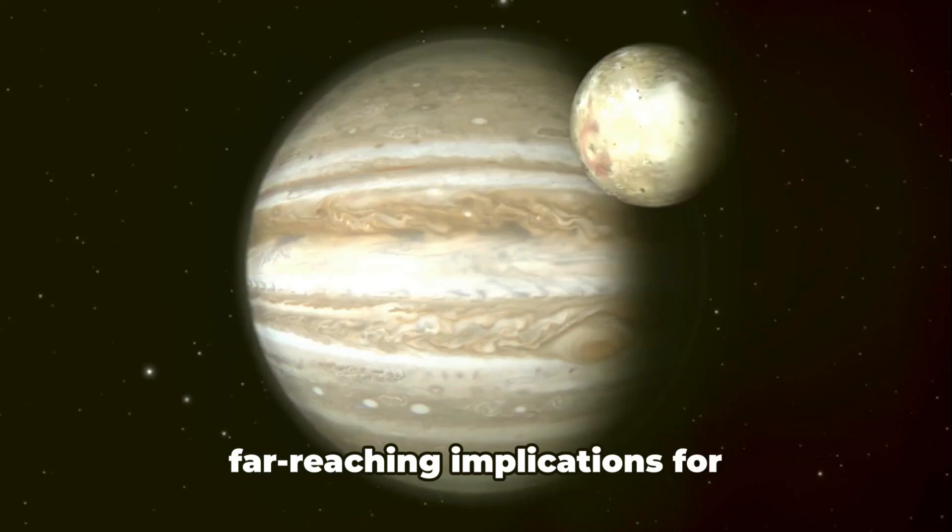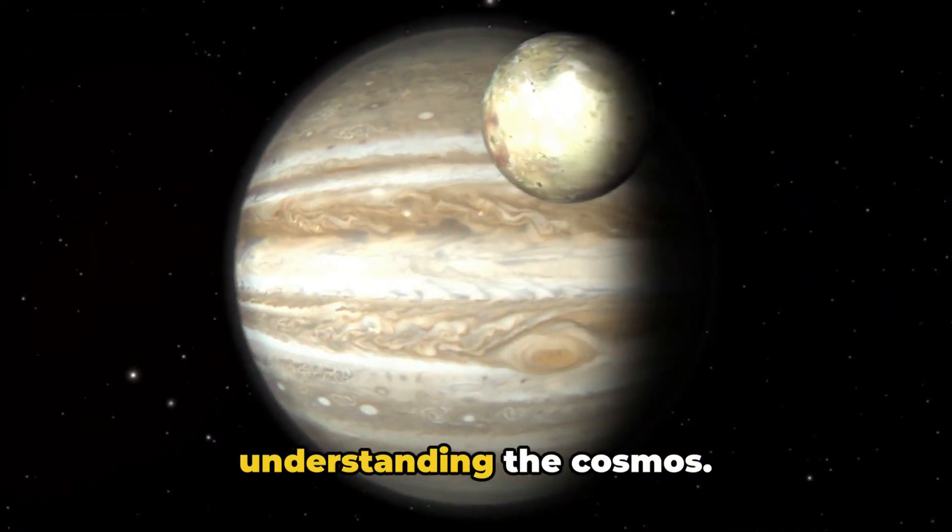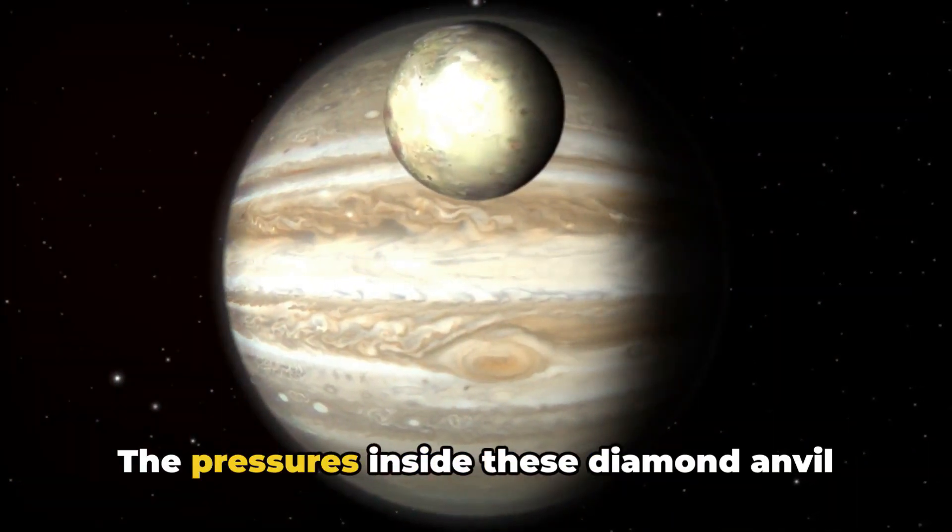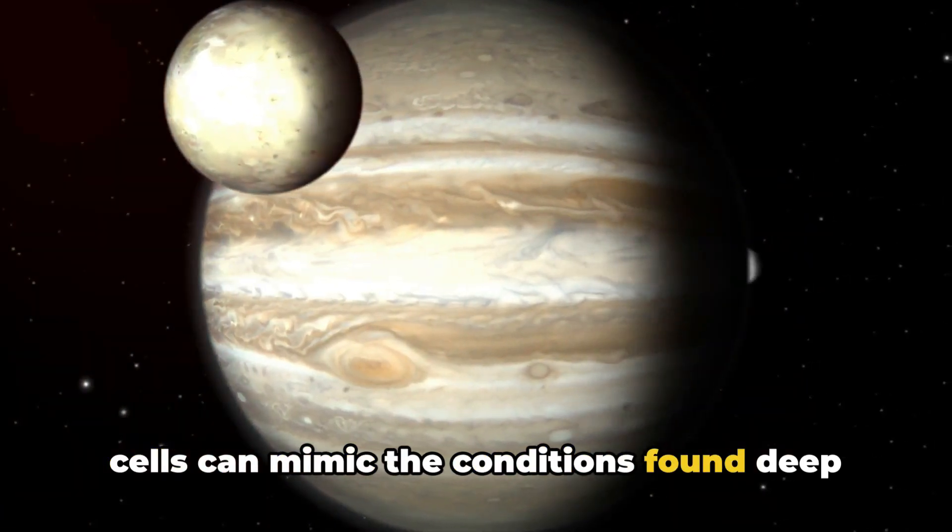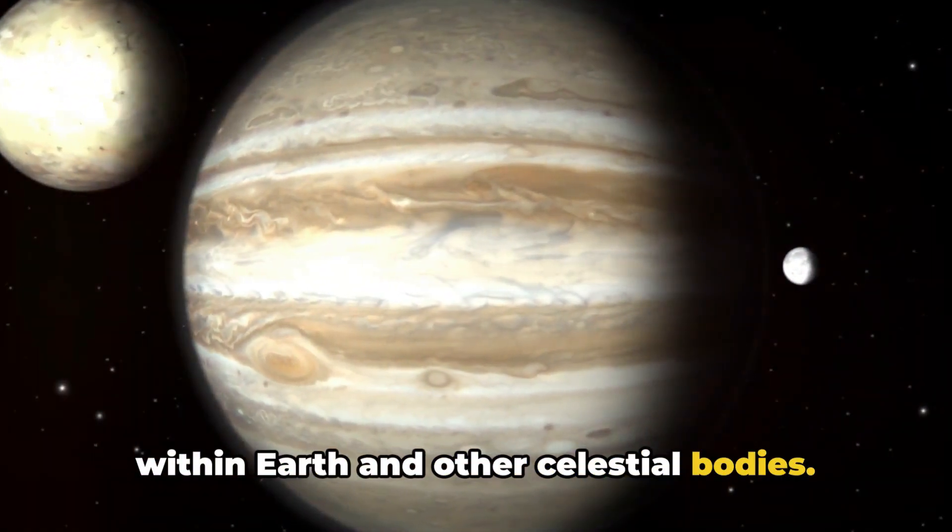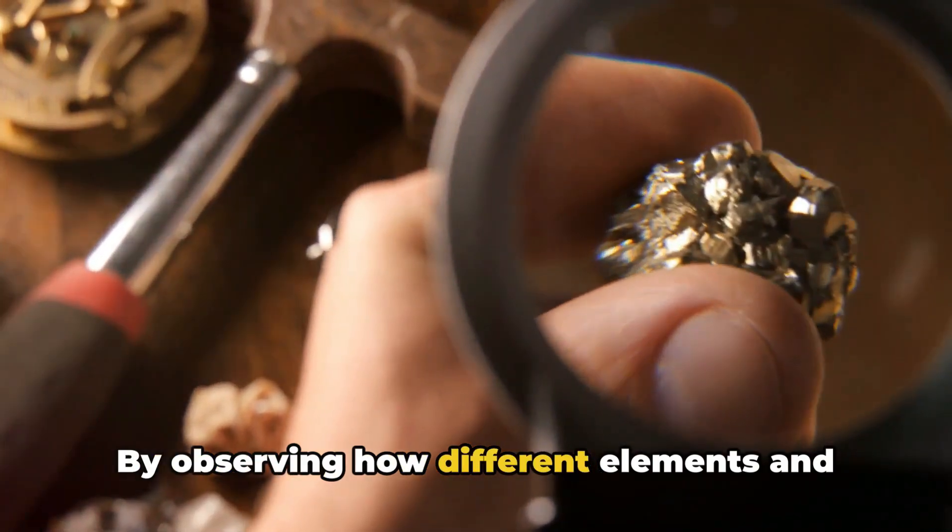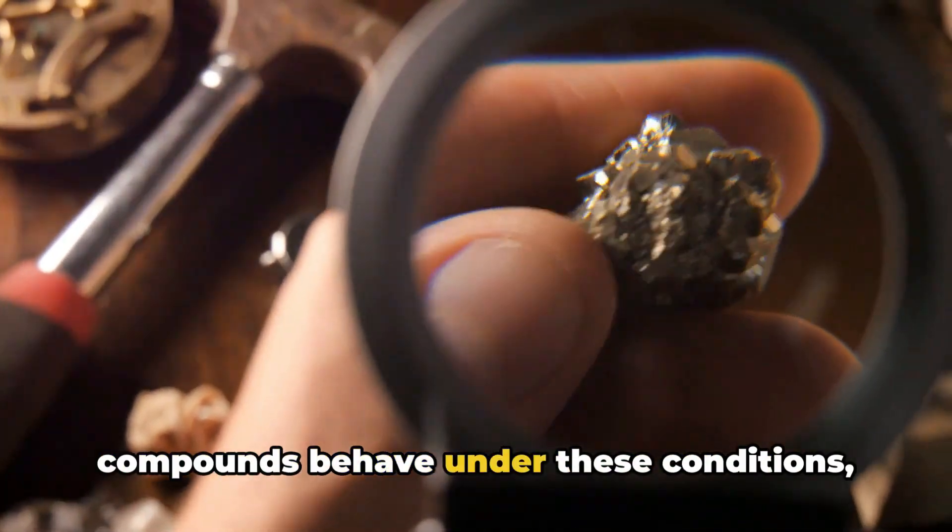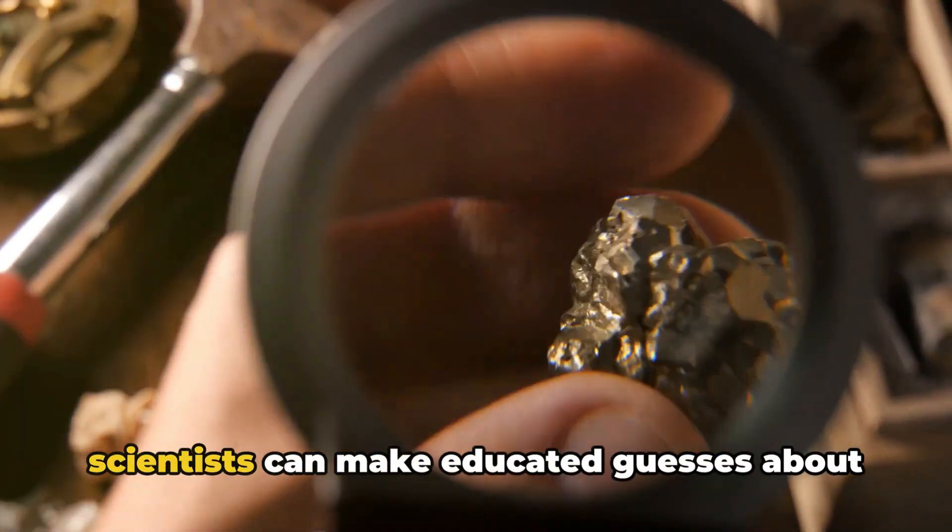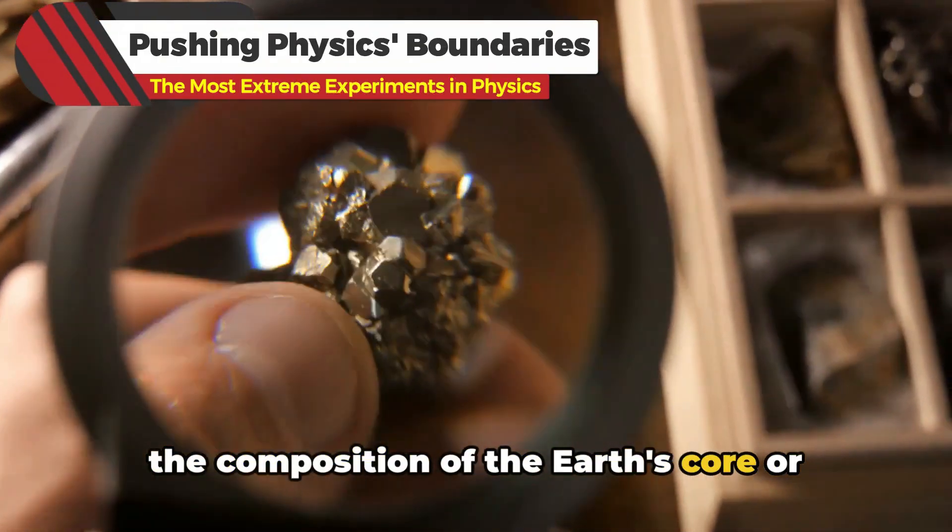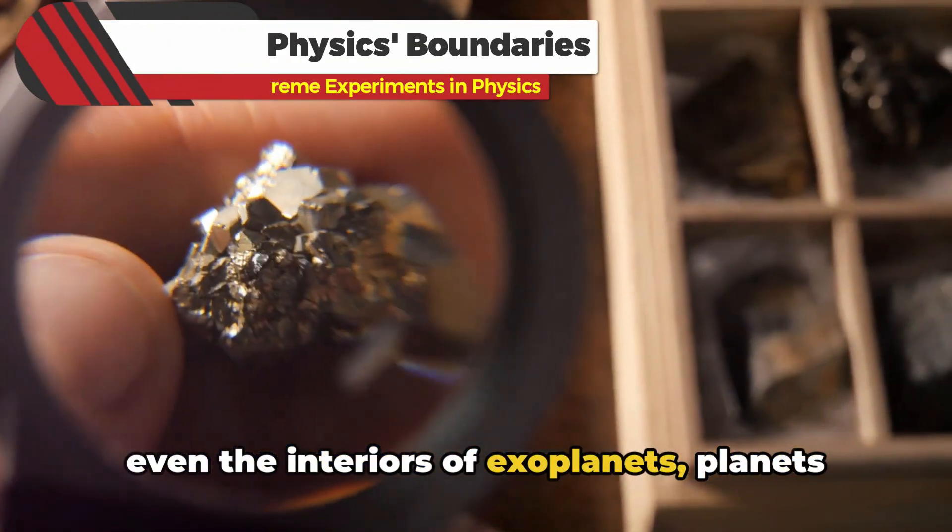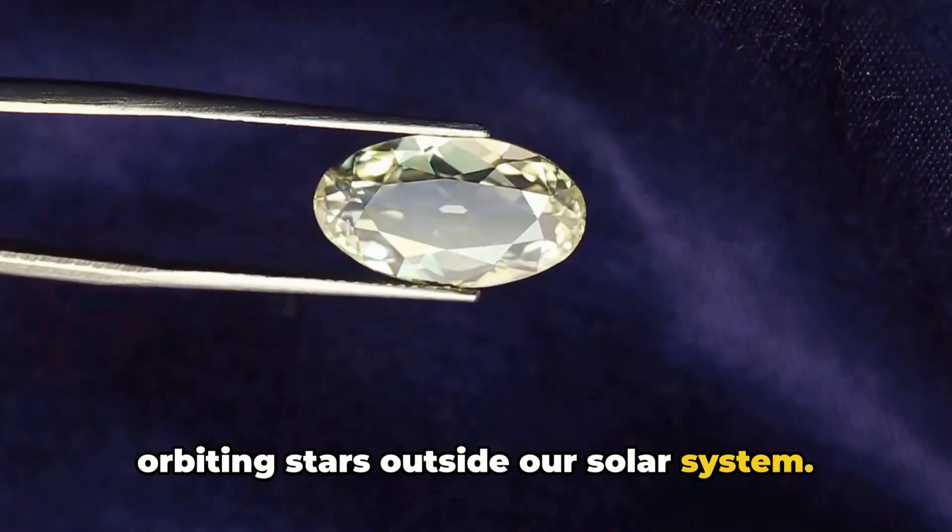Moreover, these experiments have far-reaching implications for understanding the cosmos. The pressures inside these diamond anvil cells can mimic the conditions found deep within Earth and other celestial bodies. By observing how different elements and compounds behave under these conditions, scientists can make educated guesses about the composition of Earth's core or even the interiors of exoplanets, planets orbiting stars outside our solar system.